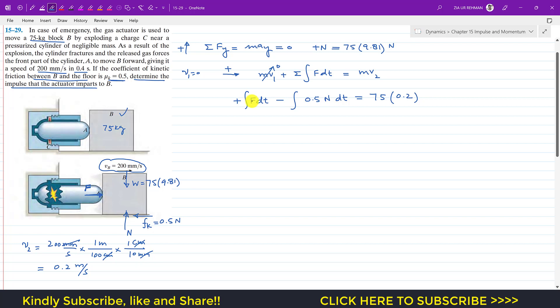If we integrate, this force F is the impulse required. This is the impulse due to the actuator minus the friction impulse. Minus 0.5 N integral dt equals 75 into 0.2. We integrate from 0 to 0.4 seconds since we want to find vB after 0.4 seconds. N equals the weight, which is 75 into 9.81.